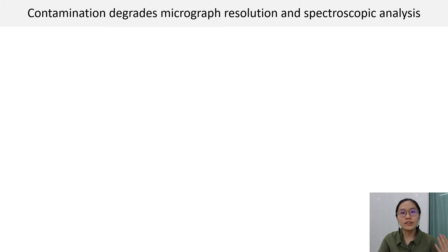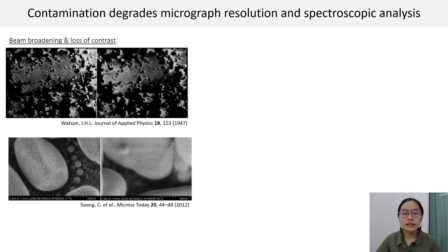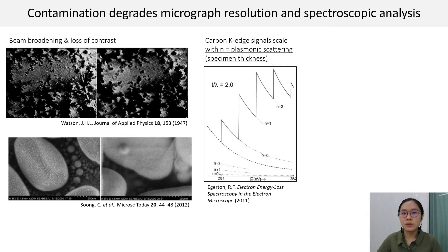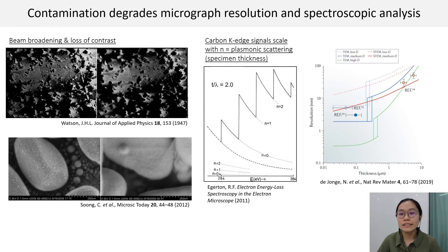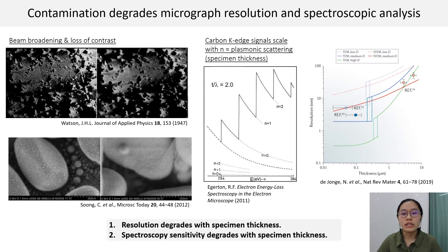The deposition of the hydrocarbon layer increases specimen thickness, and that results in low-quality electron micrographs due to beam broadening and loss of contrast. In spectroscopic analysis such as EELS, the number of plasmonic scattering scales with specimen thickness, and when combined with the scattering of a large carbon K-edge cross-section, it generates a signal so strong that it obscures our other elements of interest. De Young et al. provided a nice summary here based on analytical calculation showing that TEM and STEM resolution degrades with specimen thickness. So, increased specimen thickness due to hydrocarbon deposition is detrimental to imaging resolution and also spectroscopy sensitivity.